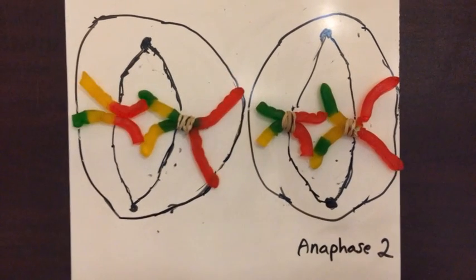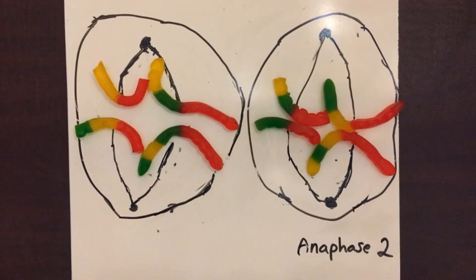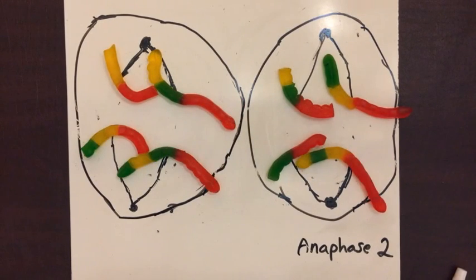In this phase, anaphase II, chromosomes separate and one chromatid from each pair travels to each pole.